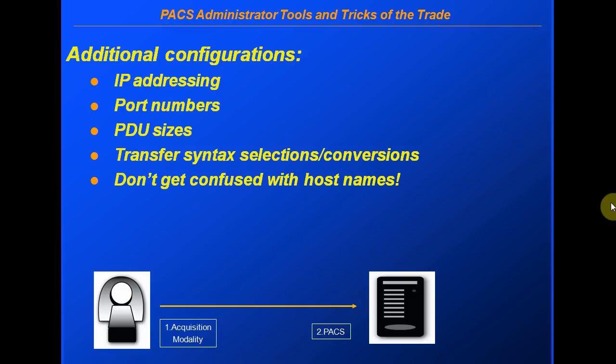There are also PDU sizes — Protocol Data Units — which can sometimes impact performance. Some devices have transfer syntax selection capability, allowing you to pick which transfer syntaxes are used for sending images. For example, if a downstream device doesn't support a particular compression, you can force the sender to send uncompressed, such as explicit Little Endian. Hostnames don't have real meaning in the DICOM domain, and using the AE title as a hostname would be considered bad practice.